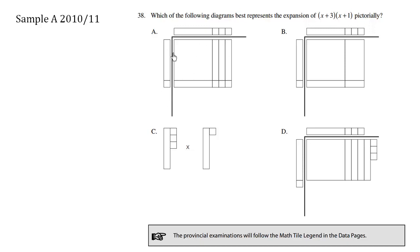So these are the factors on the side, and when you multiply the factors, you actually get the answer, which is here in the middle. x times x is x squared — this big huge box is an x squared. Positive x times positive 1 becomes a positive x. So these are all positive values.